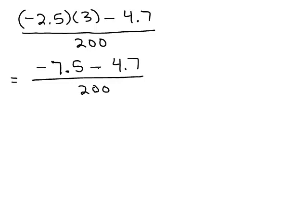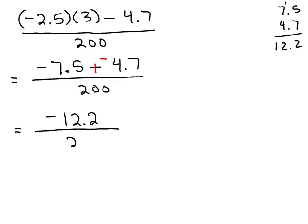Okay, I still have to simplify in the numerator. So I've got these negative signs. Let's change this subtraction to plus a negative. Okay, so now I'm adding two negatives. So will my answer be positive or negative? It'll be negative. When you add two negatives, you get a negative. So you need to add 7.5 and 4.7. I'll just do that over on the side here. 7.5, 4.7 because it's going to be 12, carry the 1, 12.2. So I have negative 12.2 divided by 200.